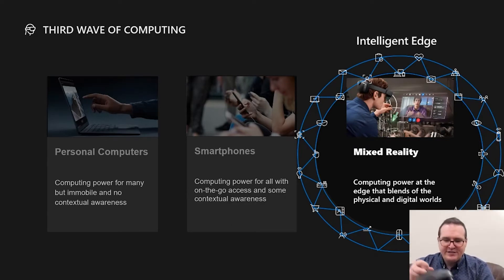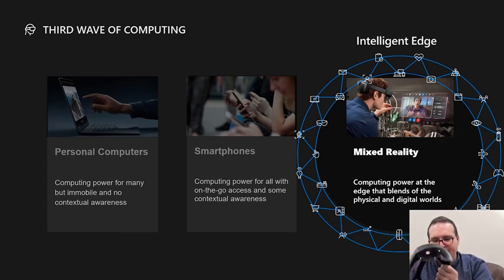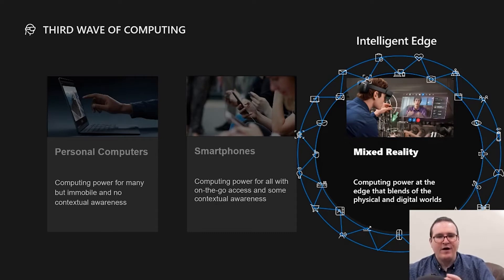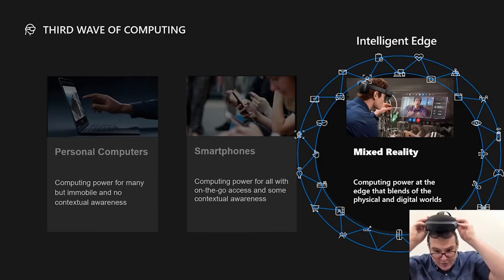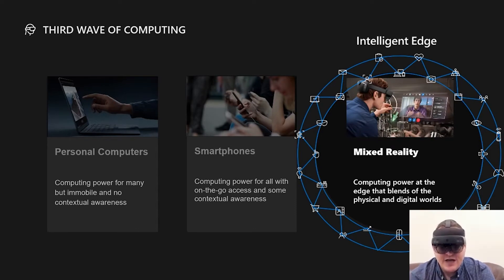This is really now manifesting in devices like this, which is our HoloLens 2. This basically provides the ability for me to have awareness both of my physical surroundings, as well as, through the ability to look through the lenses here, the power of the world enabled through the intelligent cloud.